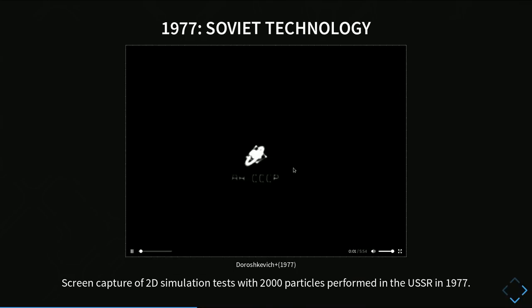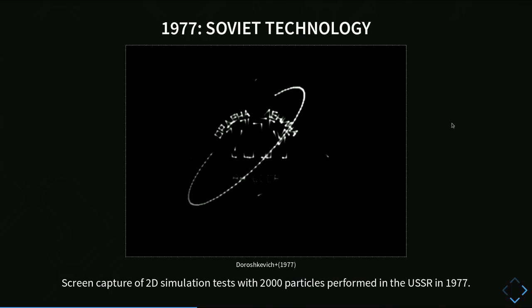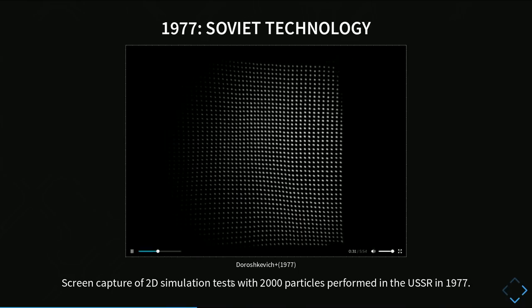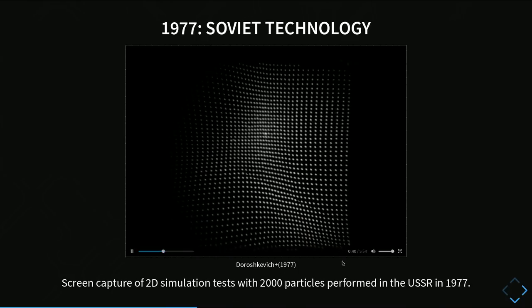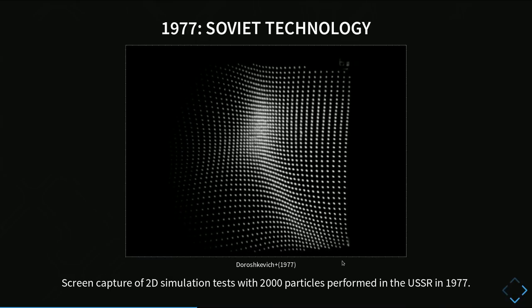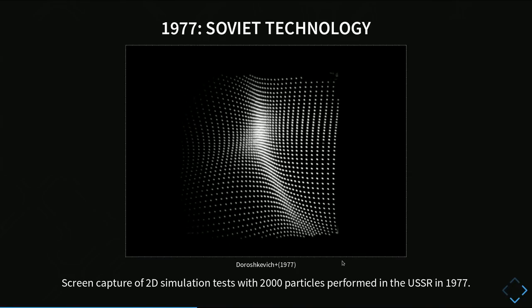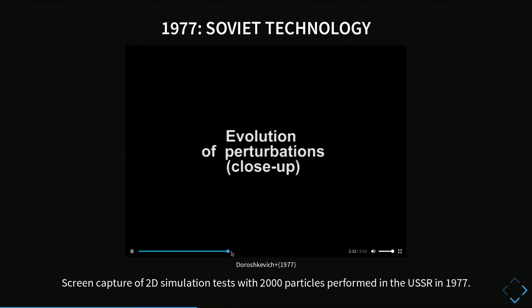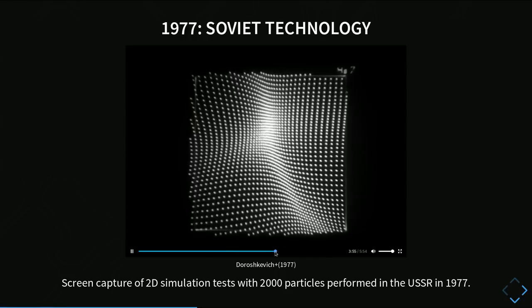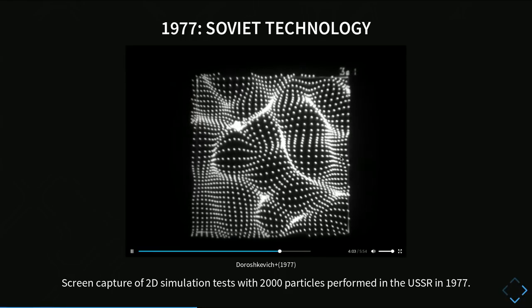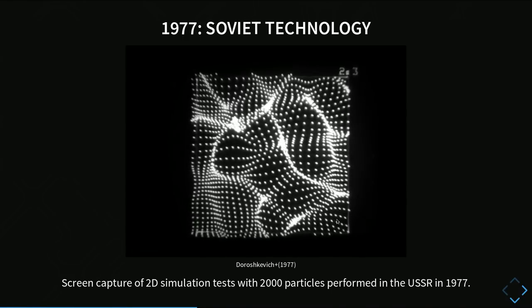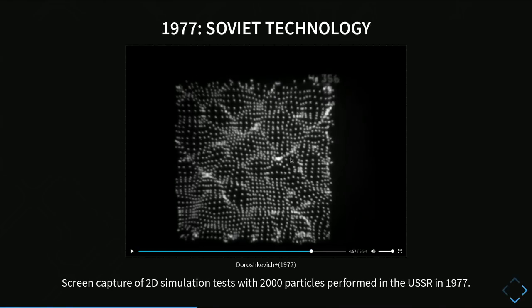We're also not the first to do this — people in the 70s already did this. A colleague of mine unearthed a video from the USSR, where Doroszkiewicz and co-workers already did this in the 70s and then projected it on a screen and filmed it with a camera. You already see the same basic structure. They even had quite realistic cosmological density fields, in 2D but nevertheless.